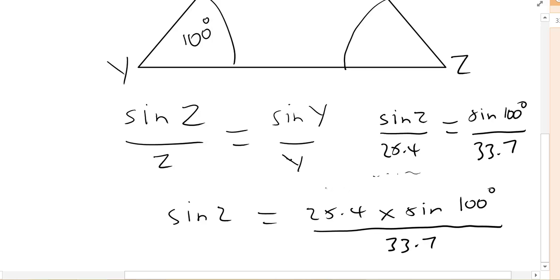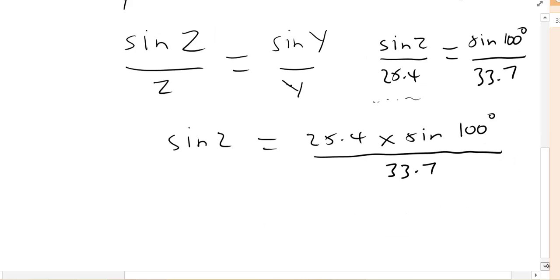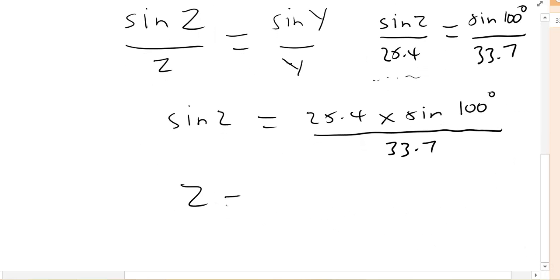And then to find z, we'd go z equals sin to the minus one of our answer: 25.4 times sin of 100 degrees divided by 33.7, and that would give us z.